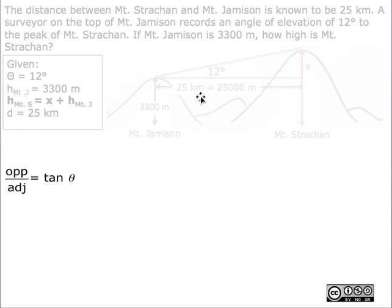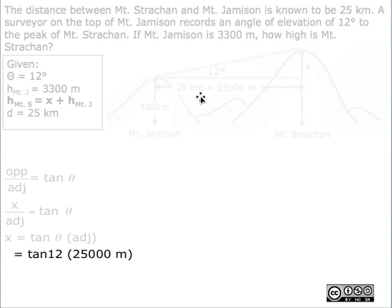Next, we have to solve for x, and we do this by using trigonometry, specifically the tan ratio. We want to solve for the opposite side, so we have to rearrange the equation. Once it is rearranged, we put the numbers in, giving us tan 12 multiplied by 25,000 meters, which equals 5,313.9 meters.